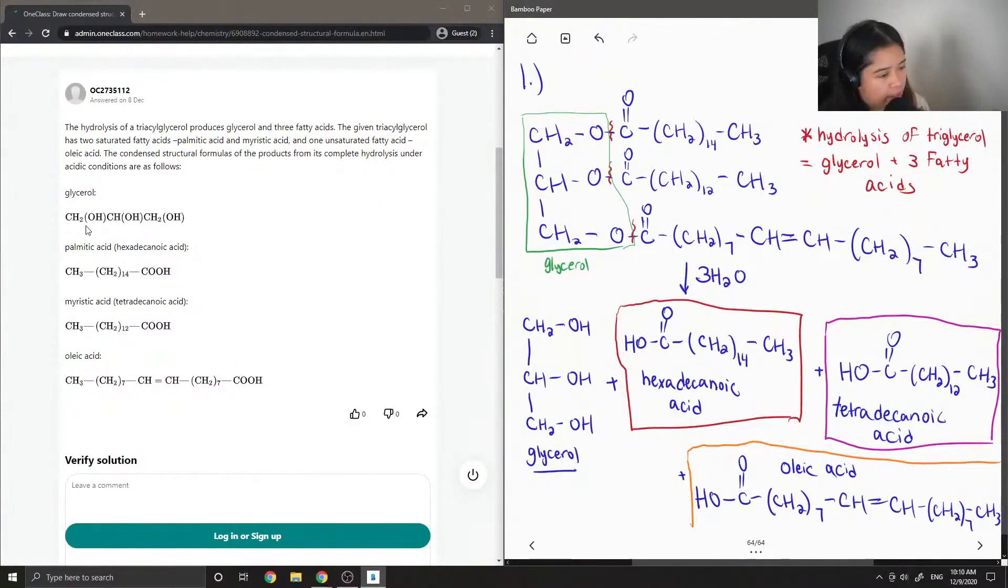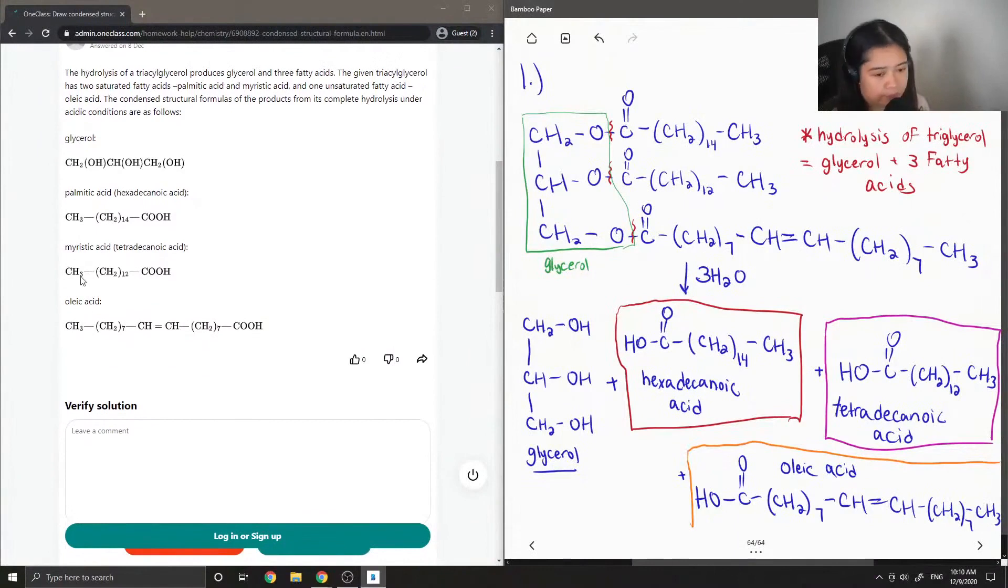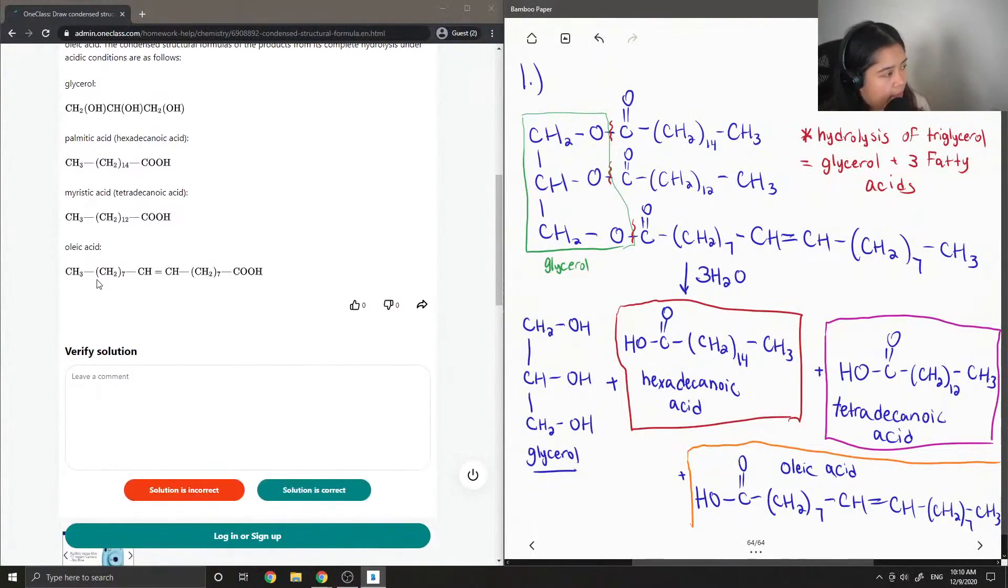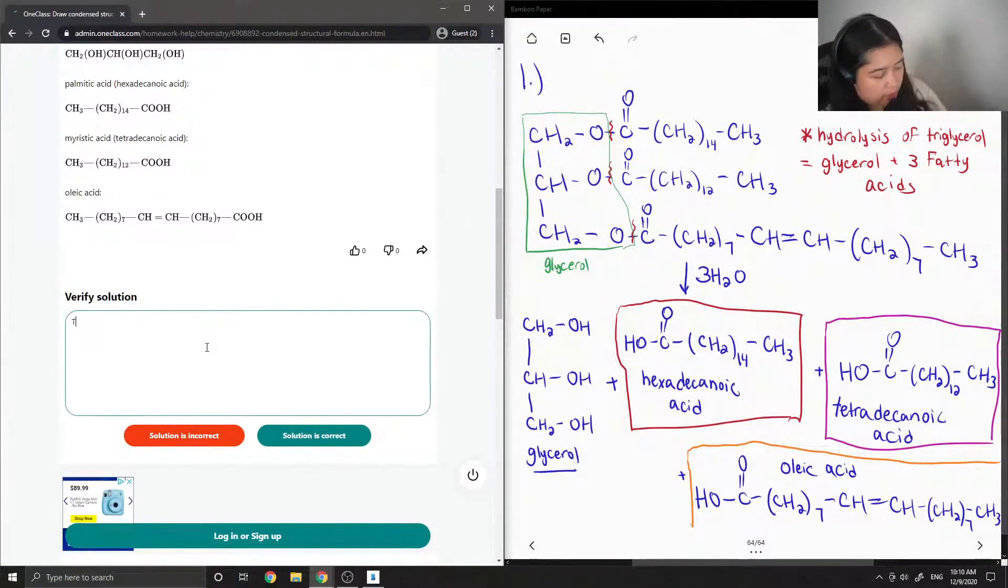Glycerol CH2OH CHOH CH2OH. Then this is the hexadecanoic acid we drew, also called palmitic acid: CH3(CH2)14COOH. Myristic acid CH3(CH2)12COOH, also tetradecanoic acid. And then they have the oleic acid down here. Yep, so this solution is correct.